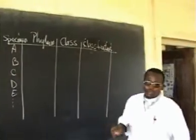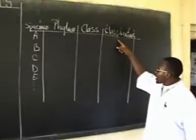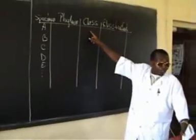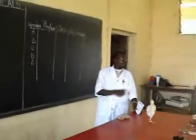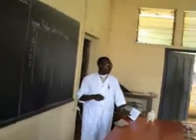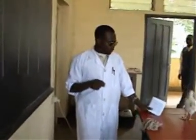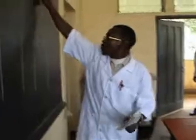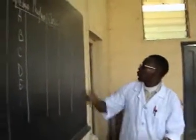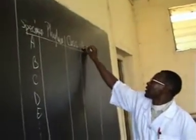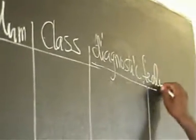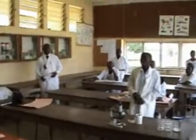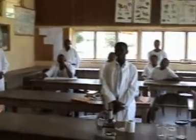When asked for a class feature, candidates observe organism A and give one characteristic that belongs to all members of the class to which organism A belongs. If asked for a phylum feature, they give one feature common to all members of that phylum. Alternatively, candidates could be asked to give a diagnostic feature — a feature that outrightly distinguishes that organism from other members of its phylum or class.